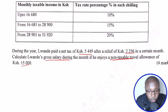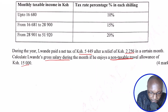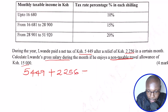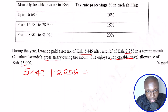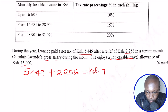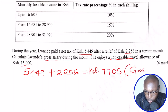The first thing we're going to do using the net tax is add the relief, and this will give us the gross tax. So net tax is 5,449, and we add 2,256. When you take the net tax and add the relief, you get the gross tax. So 5,449 plus 2,256 gives us 7,705. And this is the gross tax.